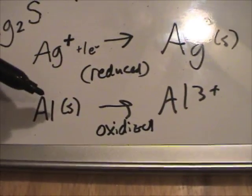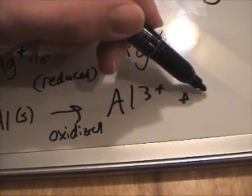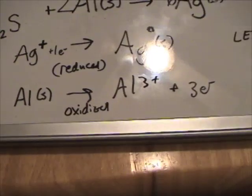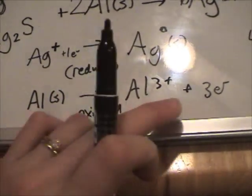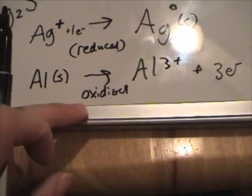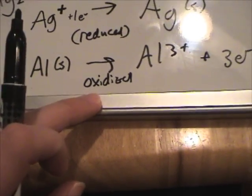It loses electrons. So, you'd have three electrons lost from that aluminum solid. Oxidation is loss of electron, or loss of electrons is oxidation.